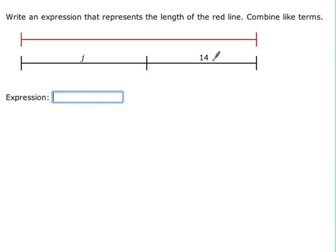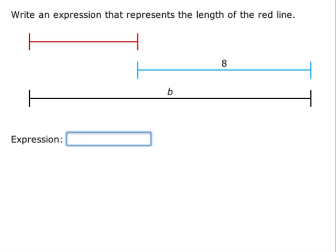In this particular problem, the 14 is just a constant, it doesn't have a variable with it, so we just have J plus 14 and we're done.